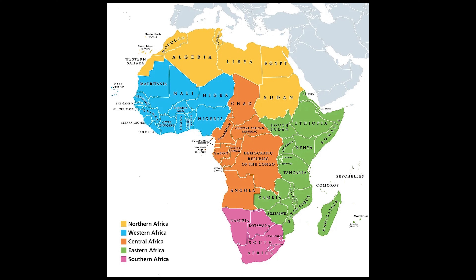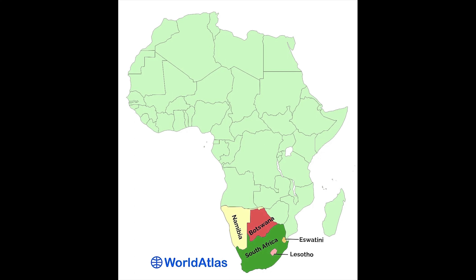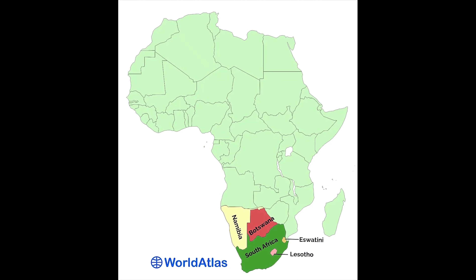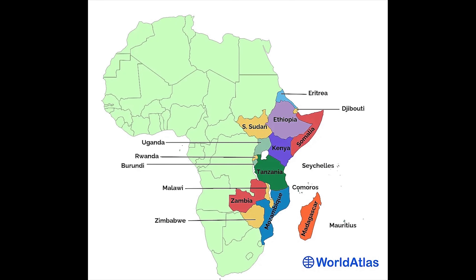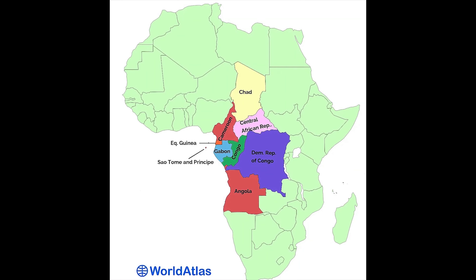The United Nations geoscheme divides the continent into five distinct subregions: Northern Africa, West Africa, Middle Africa, East Africa, and Southern Africa. Northern Africa is the largest subregion by land area, while Southern Africa is the smallest and also the least populous. Northern Africa has just five countries and Southern Africa six. East Africa, the most populous subregion, contains 18 countries; West Africa has 16 countries and Middle Africa has nine.